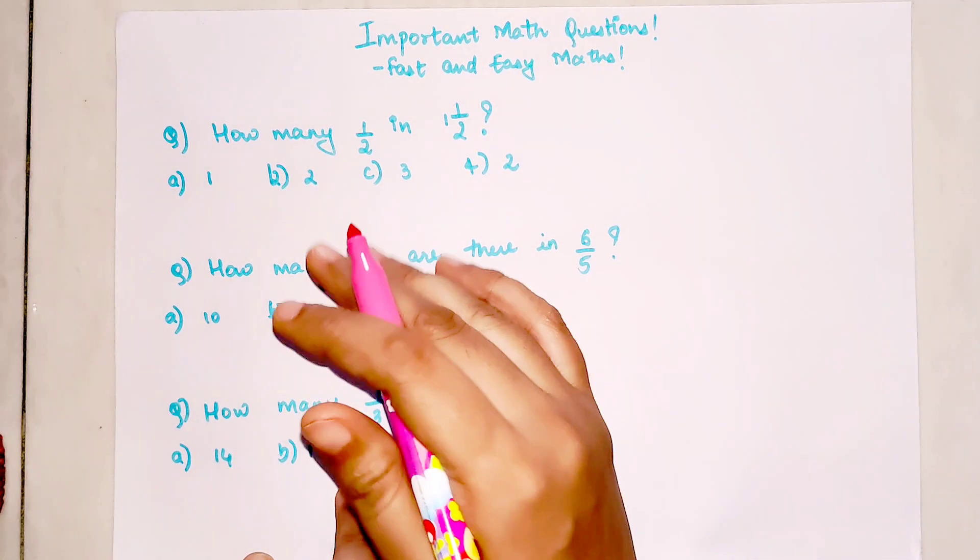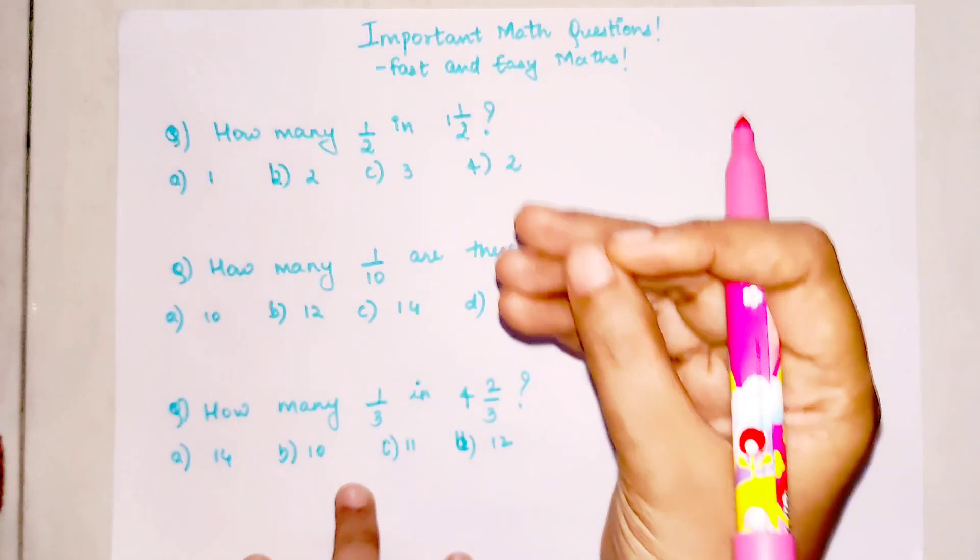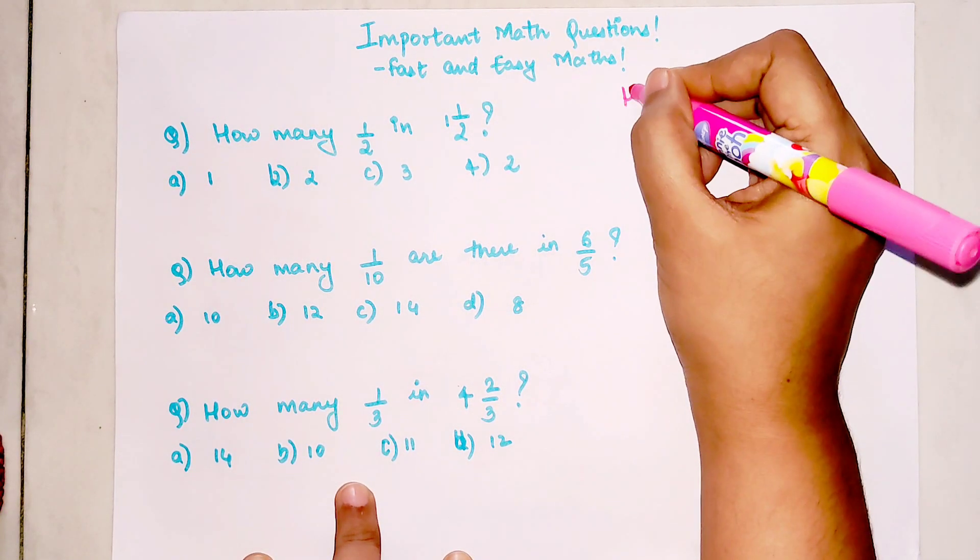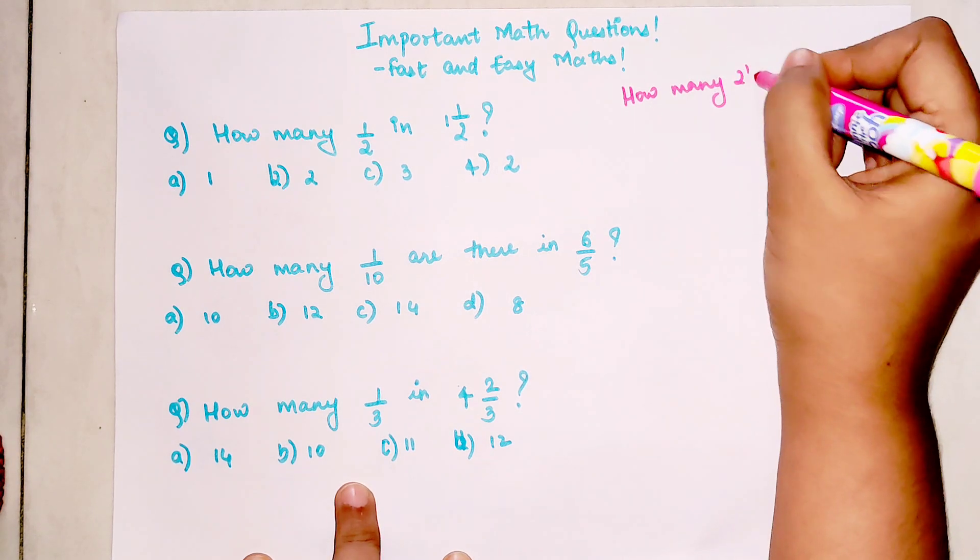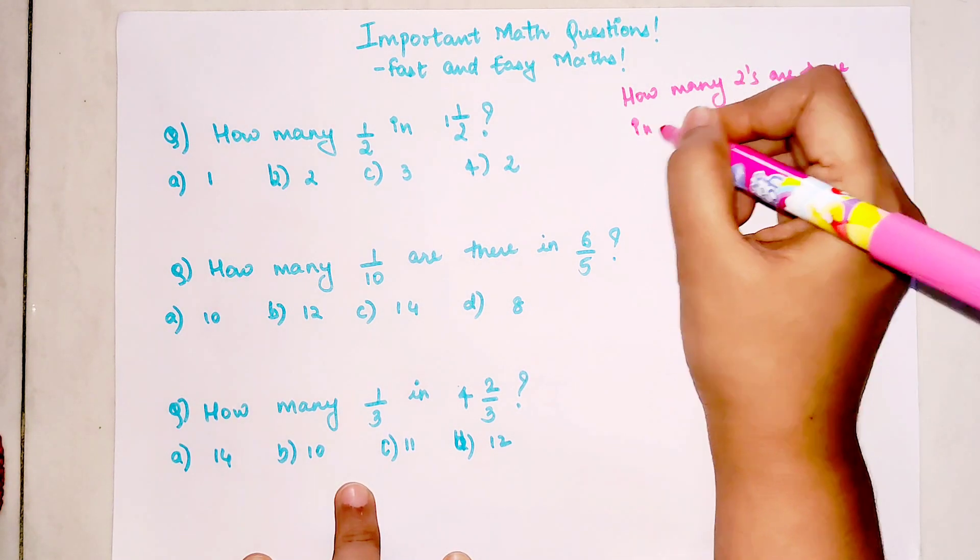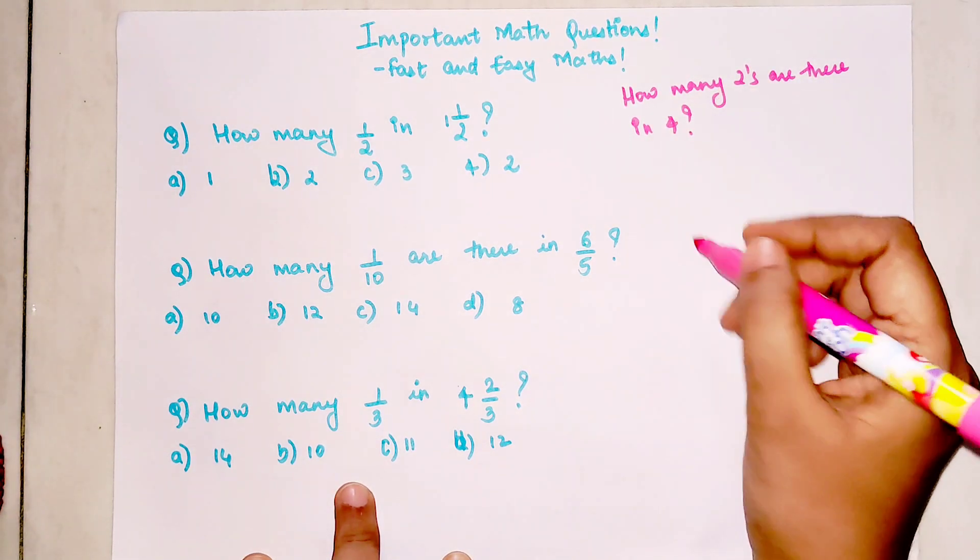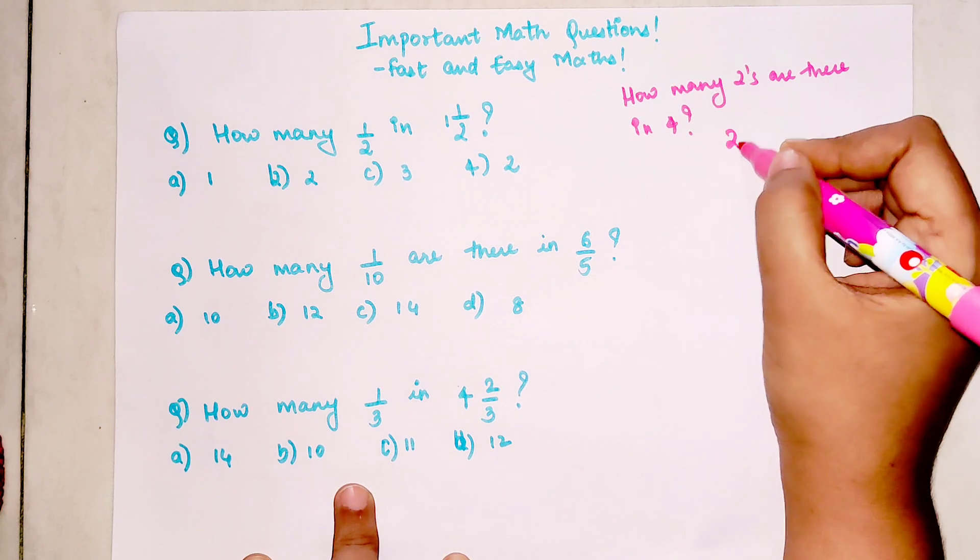Before solving these, let's quickly understand this with a small example. If the question was how many 2s are there in 4, we can write 4 as 2 times 2. So I can say there are two 2s when you come across the factors of 4.